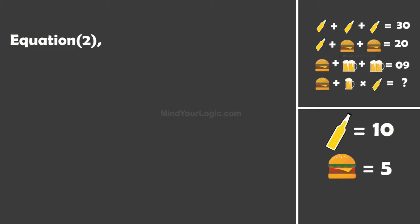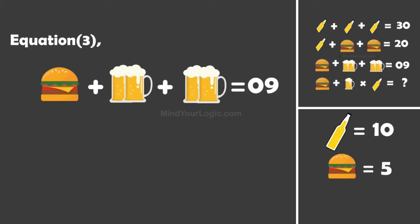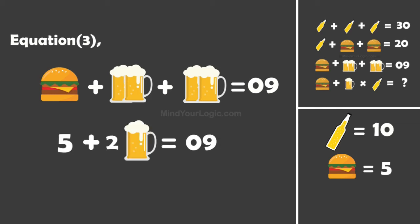Moving forward to equation 3: Burger plus 2 Beer plus 2 Beer equals 9. Substituting the value of Burger, we get Beer equals 1.